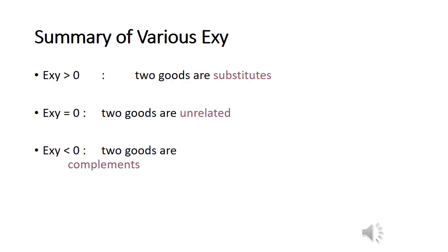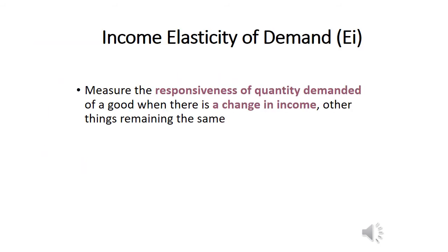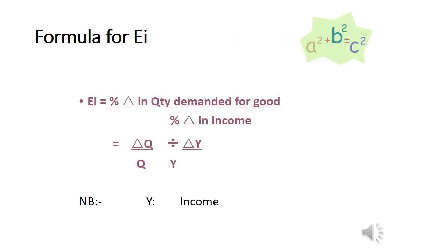If you obtain an answer greater than zero, the two goods are substitutes. If it's less than zero, the two goods are complements. If it's zero, they are unrelated. You can find this table inside your notes. Lastly, income elasticity measures the type of good — normal or inferior. The formula has percentage change in quantity demanded on top and percentage change in income below. We want to study whether the consumer buys more or less when their income changes, and this will tell us what type of good it is.